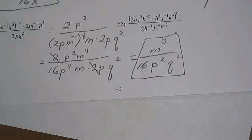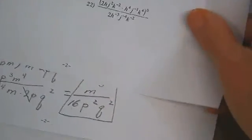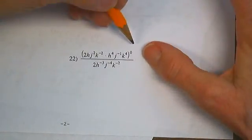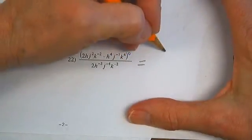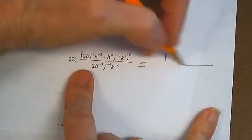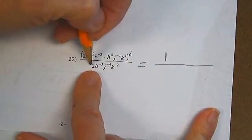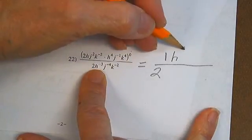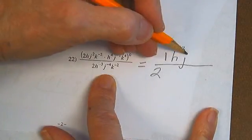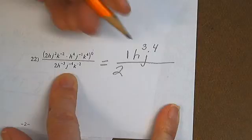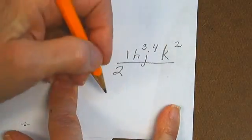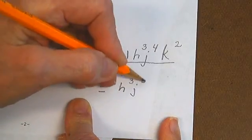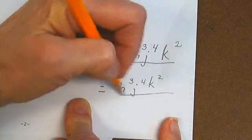Problem 22: the entire numerator expression is raised to the zero power — that's one. Now, what's my denominator? I have a 2 down here. H to the negative 3 puts my h into the numerator, my j in the numerator, and my k in the numerator. So my answer ends up being h cubed j to the 4th k squared over 2.